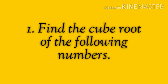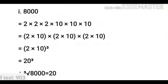In sum number 1, we have to find the cube root of the following numbers. First, we find the cube root of 8000. As you can see, the factors of 8000 equal 2 multiplied by 10, the whole cube, which is equal to 20 cube. So, 8000 equals 20 cube. Therefore, the cube root of 8000 is equal to 20.